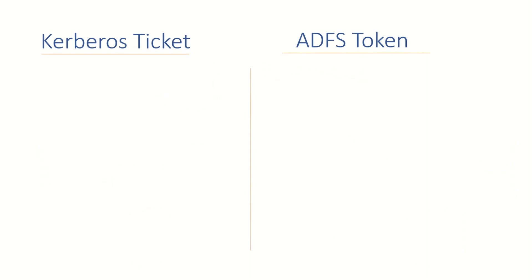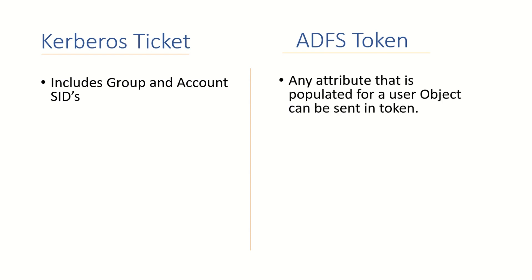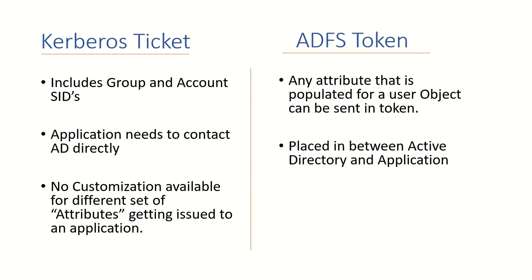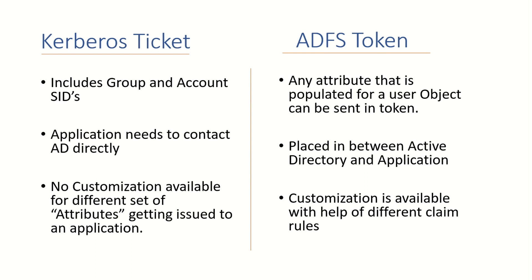Now let's talk about the basic difference between a Kerberos ticket and an ADFS token. The first difference: a Kerberos ticket includes group SIDs and account SIDs and this will be there in every Kerberos ticket. In ADFS, any attribute that is populated for a user object can be sent in the token, whereas with a Kerberos ticket that is not possible. Second, your application has to contact Active Directory directly, whereas with ADFS, the ADFS server is placed in between your application and Active Directory. Third, with Kerberos you cannot customize which set of attributes are sent to a specific application, whereas in ADFS you can do all the customization available, and that too application-specific.